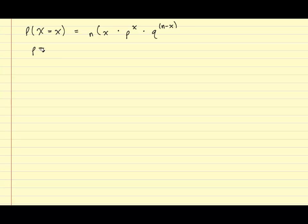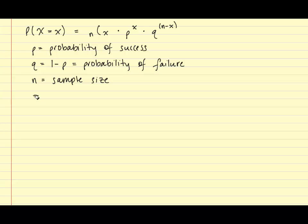Where p is the probability of success, q is 1 minus p, and that's the probability of failure, n is the sample size, and x is the number of successes. Now recall the formula for the combinations rule is n factorial over the quantity of n minus x factorial, times x factorial.